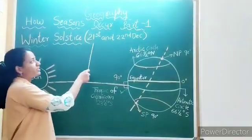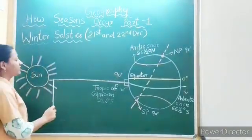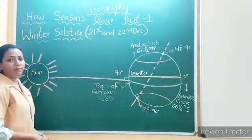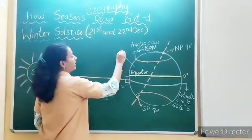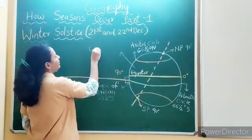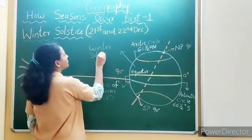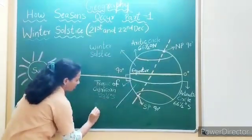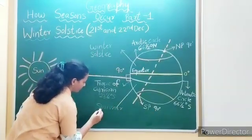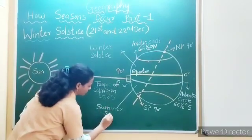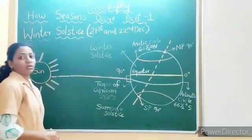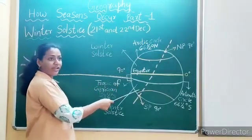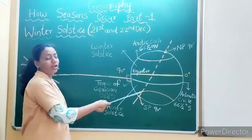Winter solstice occurs on 21st and 22nd December. On this day, sun rays are perpendicular on the Tropic of Capricorn. It means the Tropic of Capricorn will receive the maximum amount of solar radiation. In the northern hemisphere, it is winter solstice, and in the southern hemisphere, it is summer solstice. The duration of daytime in the northern hemisphere is the shortest, and the duration of daytime in the southern hemisphere is the longest.